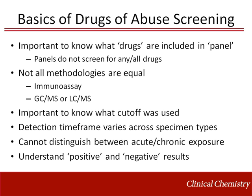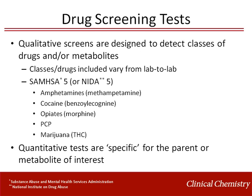Drug screens cannot distinguish between acute and chronic exposure. Most drug screening tests are qualitative and are designed to detect classes of drugs and/or metabolites. The drug classes included in a panel vary from lab to lab, and a single lab may offer more than one type of drug screening panel.